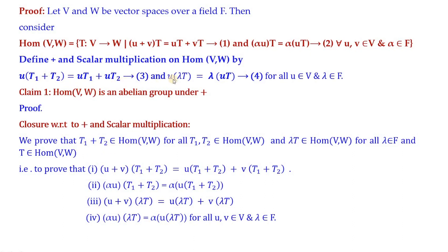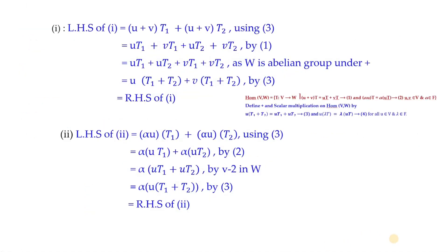We need to prove four subdivisions: (u+v)(T1+T2) = u(T1+T2) + v(T1+T2); α(u)(T1+T2) = α·u(T1+T2); (u+v)(λT) = u(λT) + v(λT); and α·u(λT) = α·(u(λT)), for all u,v in V and λ in F. For the first subdivision, considering the left-hand side and using equation 3 (pointwise addition), we treat u+v as a single element.